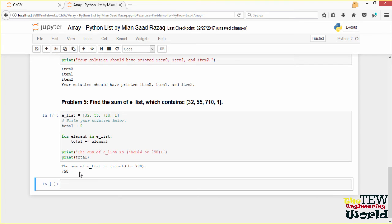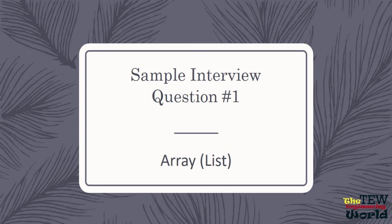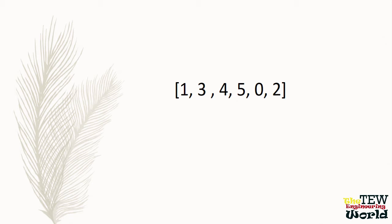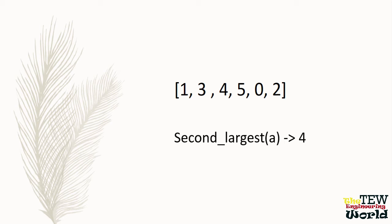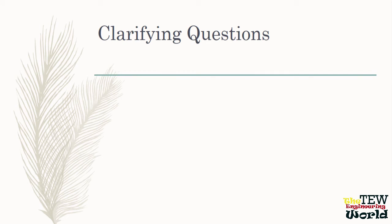Now that we have reviewed how lists in Python work, let's look at a list problem you might get in an actual coding interview. Sample interview question number 1: you are given an array or Python list of integers, for example the one on the screen. Write a function which takes the given array and finds and returns the second largest number. This function is called second largest. Second largest of this array should return 4, because 5 is the largest number and 4 is the second largest.